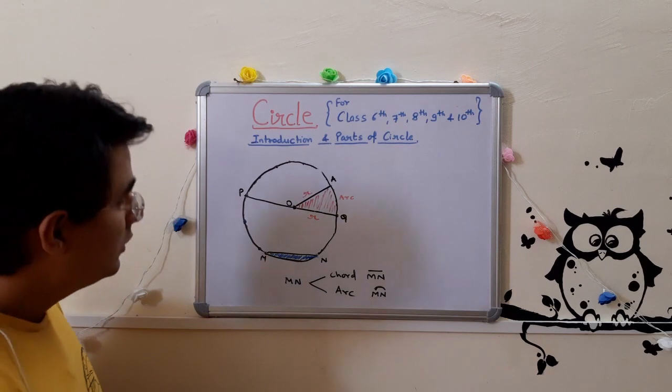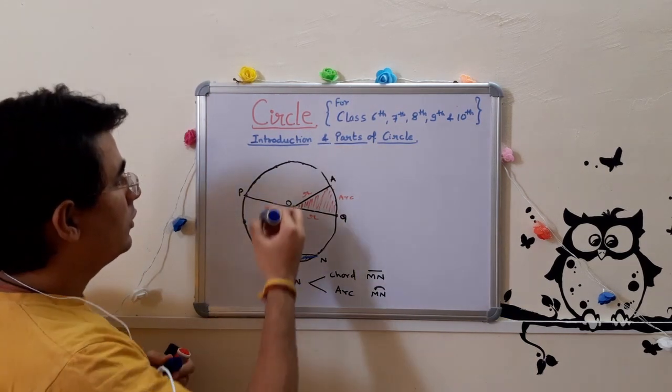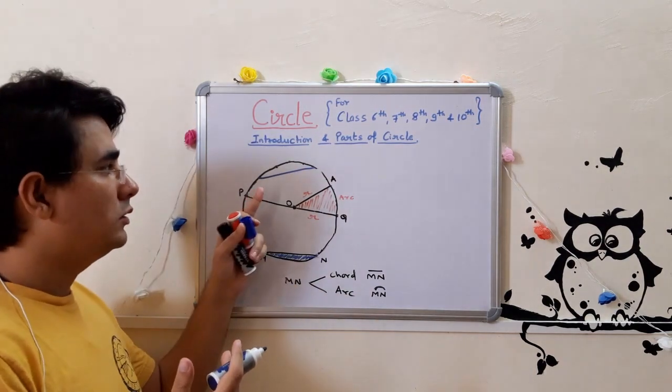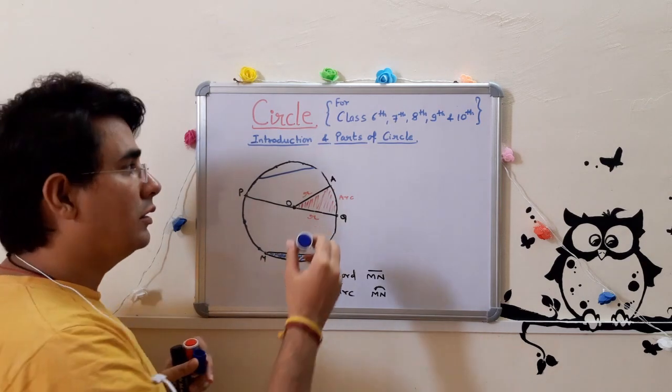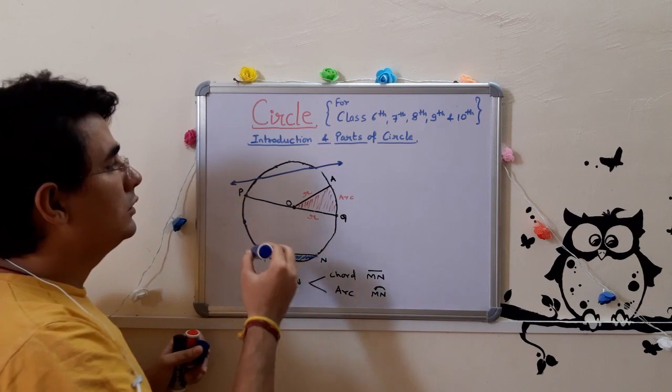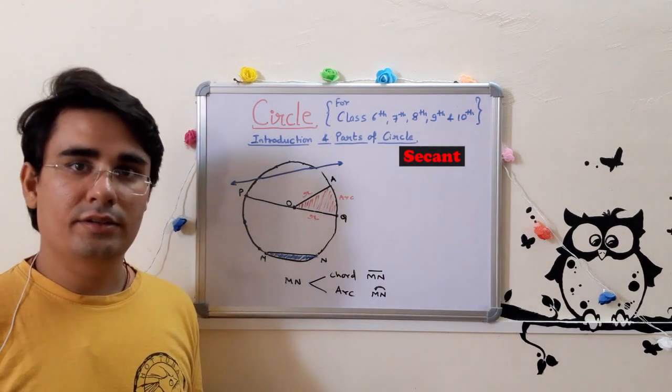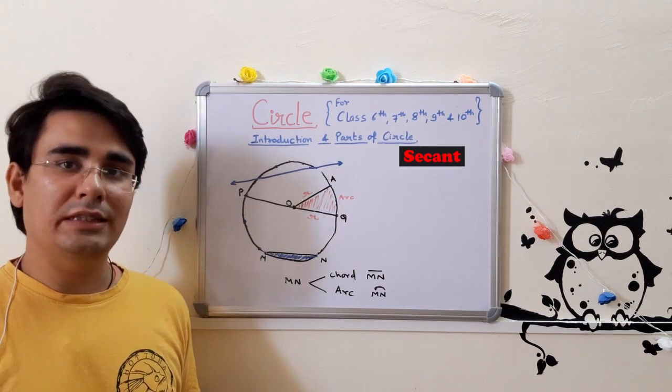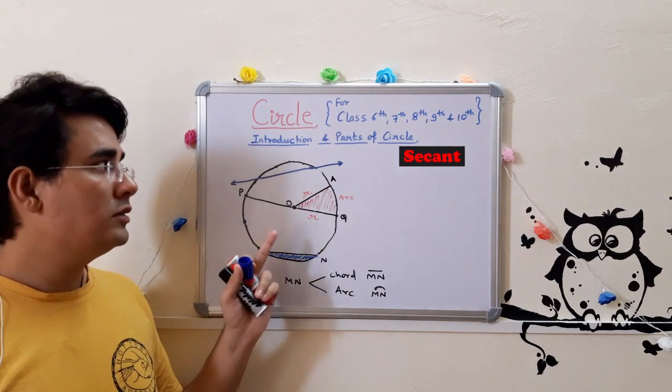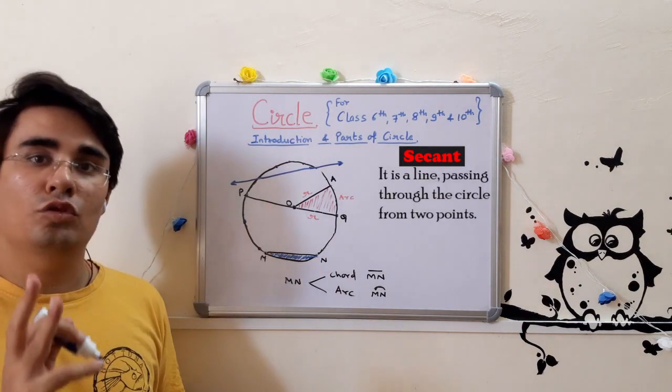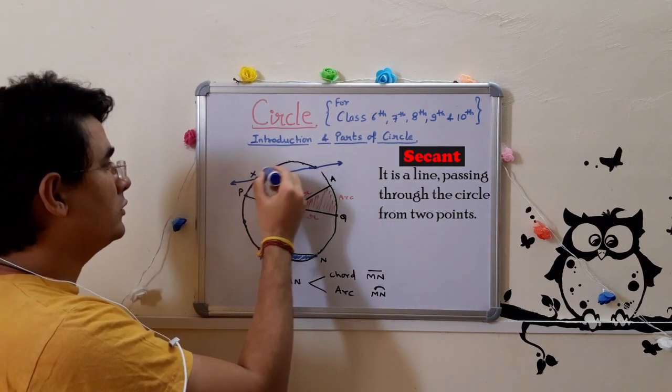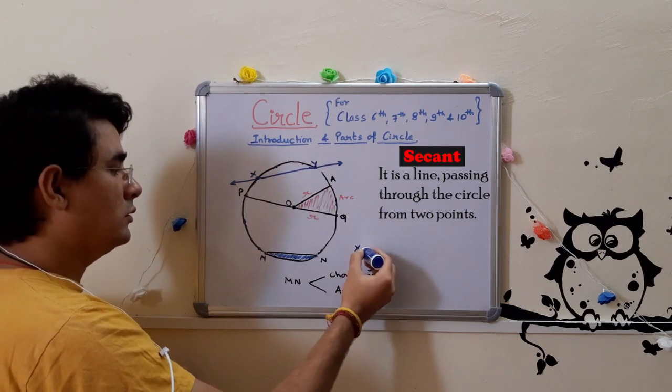So quickly, if I ask you what is this? So you already know this, this is a chord. Chord is a line segment. If I extend this to both ends, this will become a secant. This extension is called secant. Secant is a line, not line segment. Secant is a line passing through the circle from two points. Suppose I say x and y.